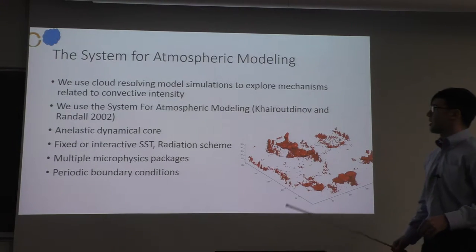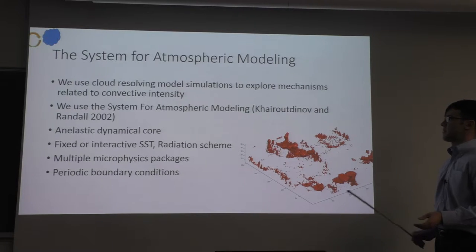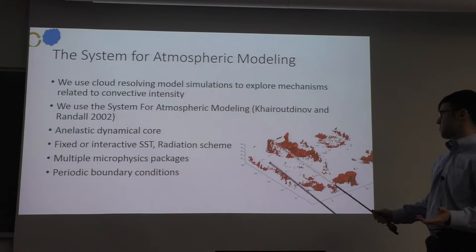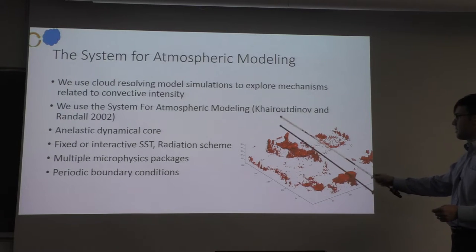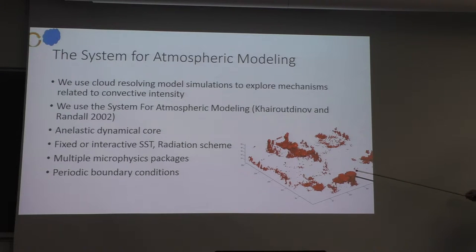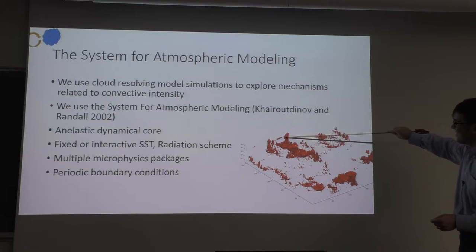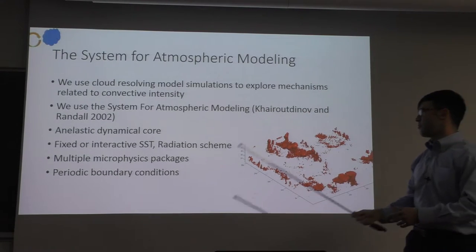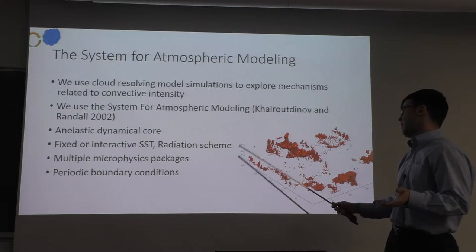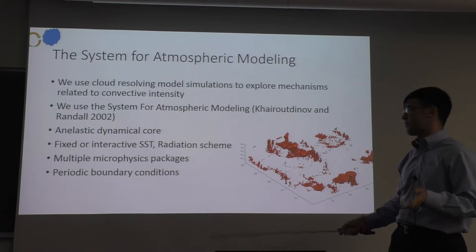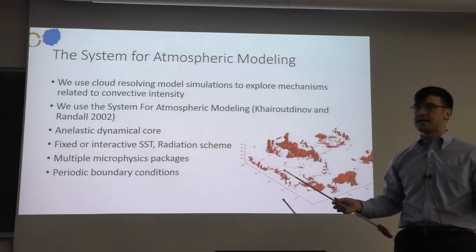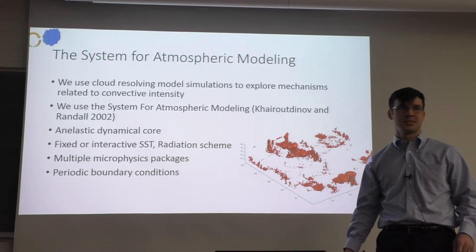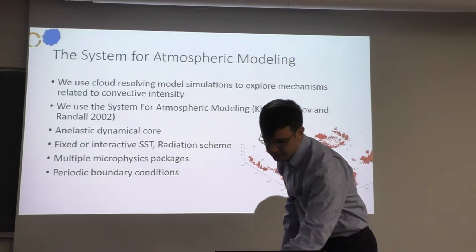We use the System for Atmospheric Modeling to simulate our thunderstorms — a cloud-resolving model run in three dimensions with periodic boundary conditions. These thunderstorms in one part of the domain are connected to another, so convection can propagate horizontally. This is basically a globe in a box. You can use fixed or interactive sea surface temperatures, fixed or interactive radiation schemes, different microphysical packages, different resolutions, and different domain sizes. In our case we use fixed sea surface temperatures because it reaches radiative-convective equilibrium much more quickly.